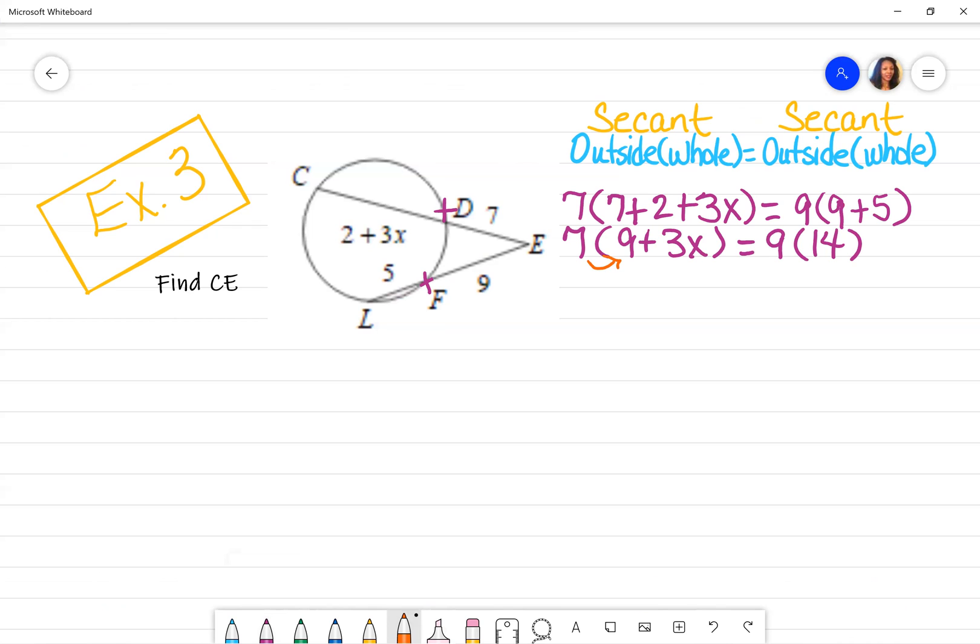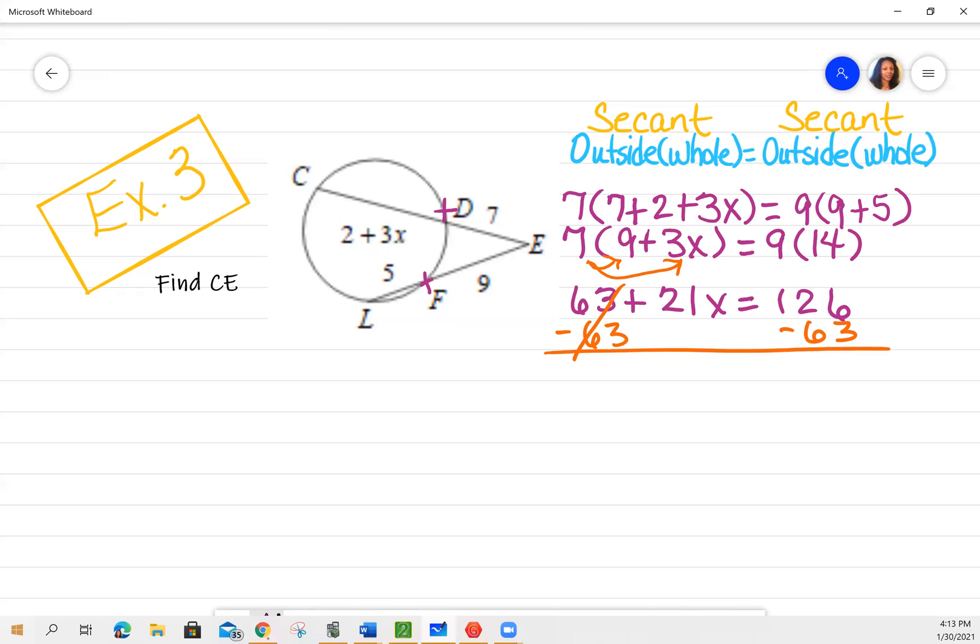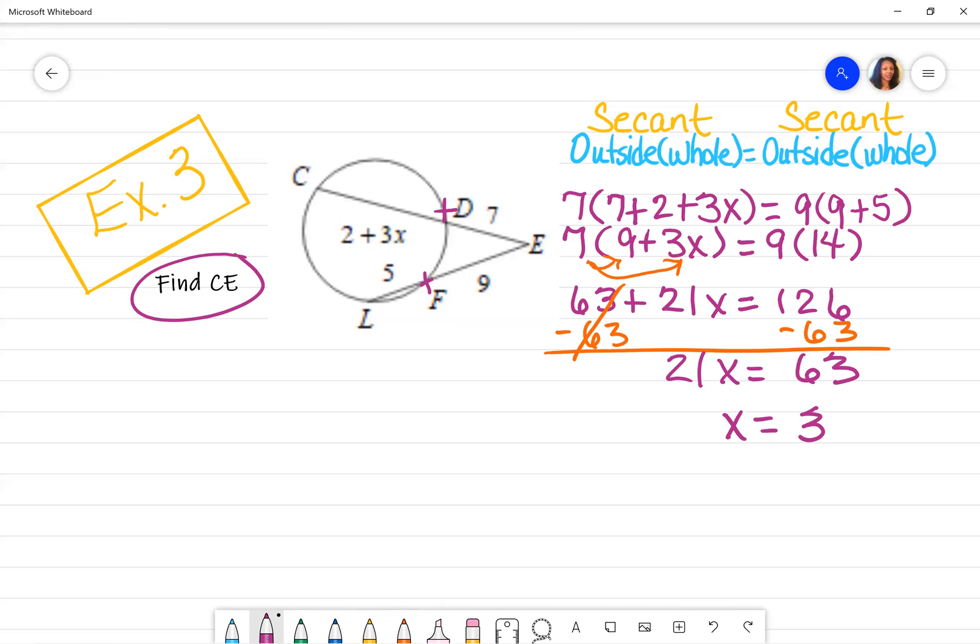Now you want to distribute on this side, which brings us to 63 plus 21X is equal to 14 times 9, which is 126. And then I'm going to subtract 63 on both sides so that I can get X by itself, which results in 21X is equal to, that's still 63, divide both sides by 21, X is 3, but my directions asked me to find CE. So again, I got to pay attention. CE is the entire secant.